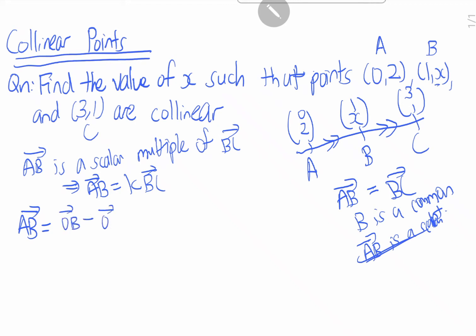So AB equals to OB minus OA, which equals (1,x) minus (0,2), which equals (1, x-2). Whereas BC is equal to OC minus OB, which equals (3,1) minus (1,x).